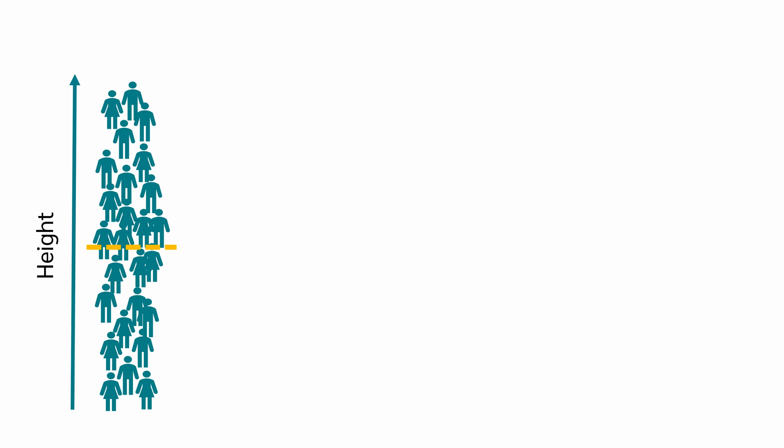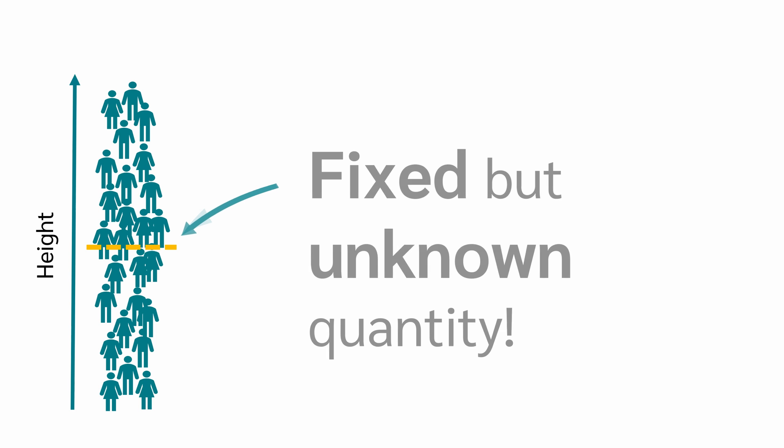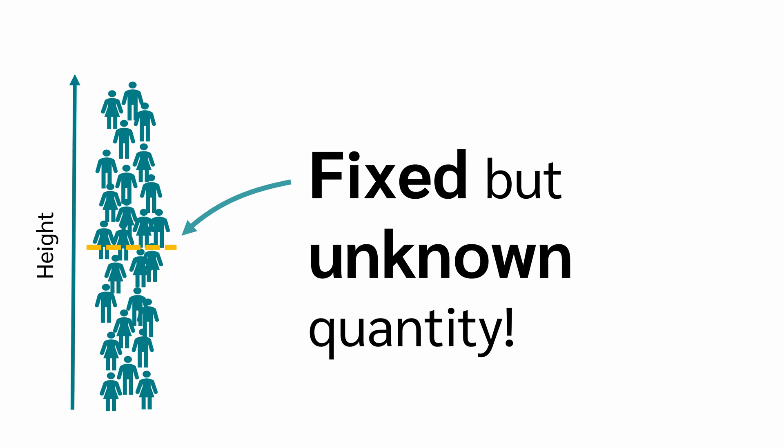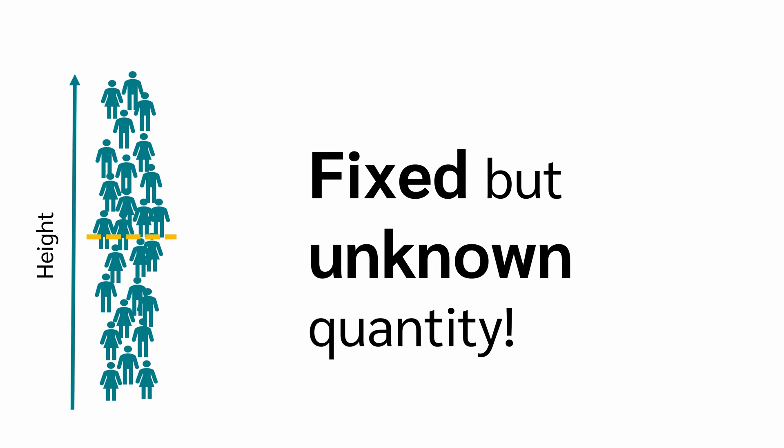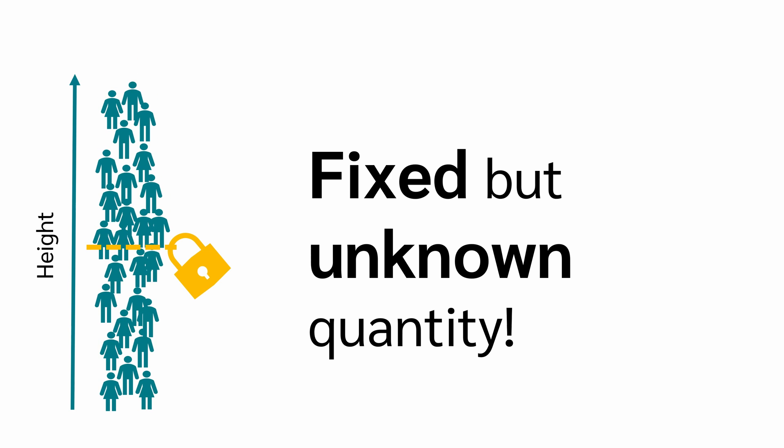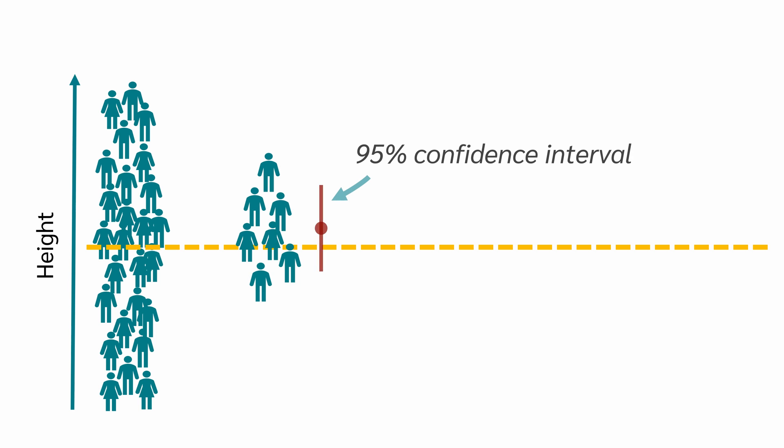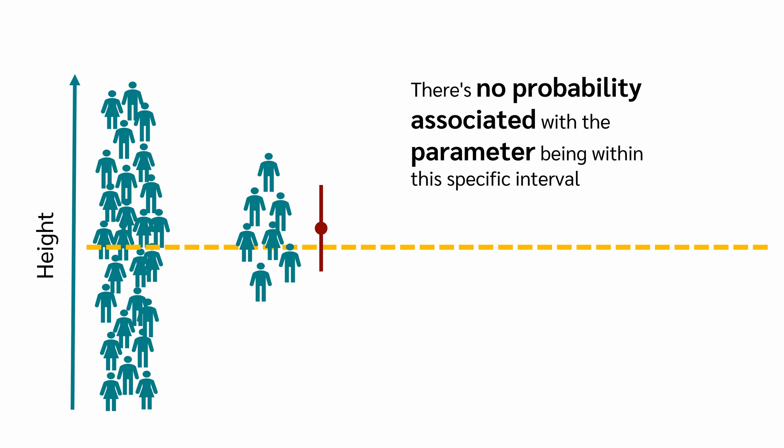In frequentist statistics, the true parameter, in our case the true mean, is treated as a fixed but unknown quantity. So the true parameter does not move around, it is fixed. If we now draw a sample and calculate the confidence interval, the true value either lies inside the interval or it doesn't. In this case, the confidence interval contains the true value. Therefore, there's no probability associated with the parameter being within this specific interval.